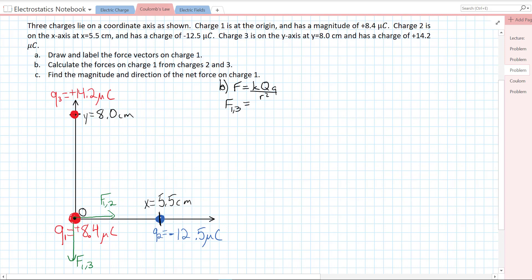Our K value is always the same. It is 8.99 times 10 to the 9 Newton meter squared per Coulomb squared. Our Q values are the magnitudes of our two charges. It's going to be the magnitude of charge one and the magnitude of charge three. Charge one is 8.4 microcoulombs, so 8.4 times 10 to the minus 6 Coulombs.